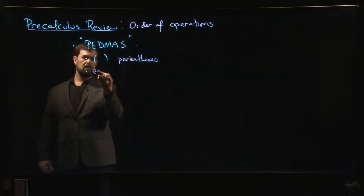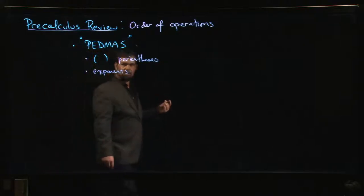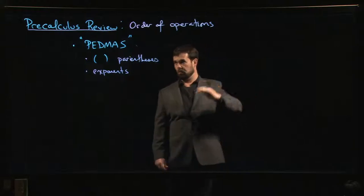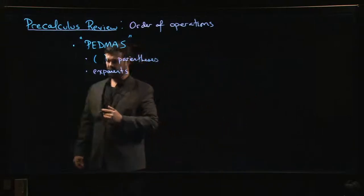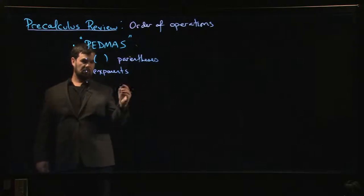The E is for exponents. The basic principle is you should start with the most complicated operations and work your way down. Exponents are more complicated than multiplication or division, so those come next.